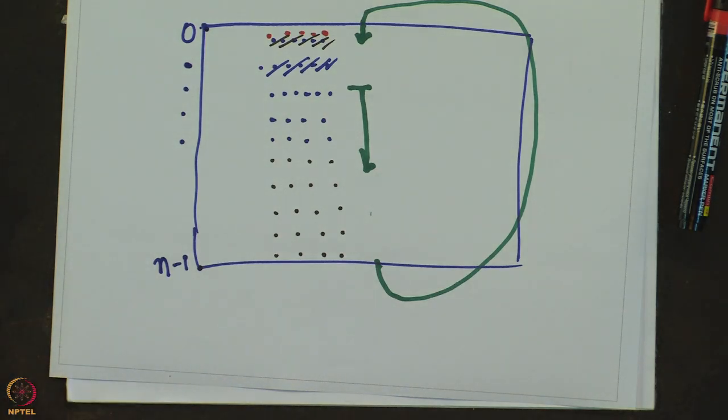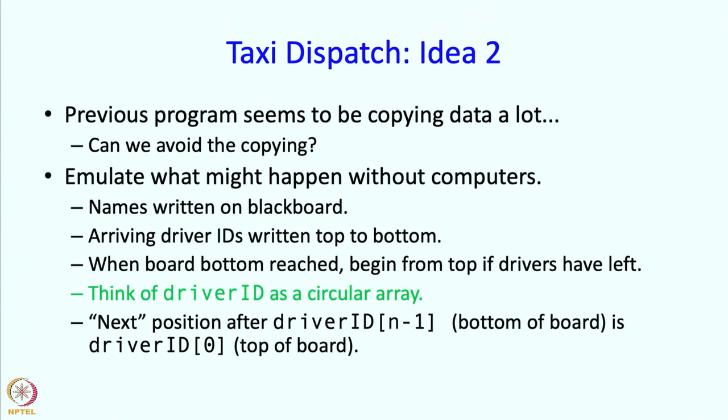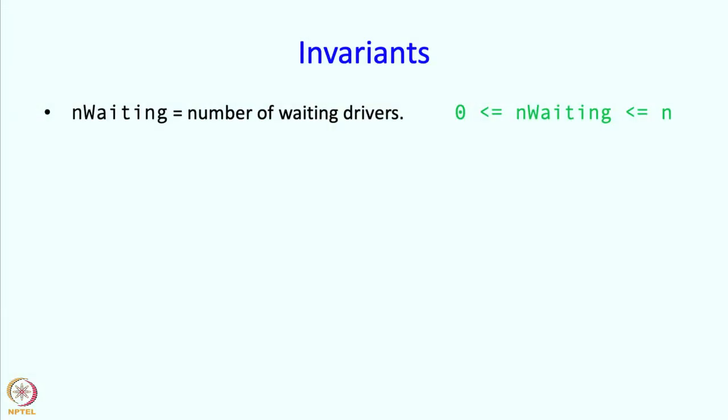So that is basically the idea that we are going to implement. And again, the idea is simple, well, it is not completely simple, it is more complicated than the previous idea. And therefore, we should make decisions sensibly at the beginning and then stick to those decisions. So we are going to say what our invariants are. As before, we are going to have nWaiting denote the number of waiting drivers. So that variable we are still going to have. We have to keep track of how many drivers are waiting and we are also going to have this invariant that nWaiting is going to lie between 0 and n.